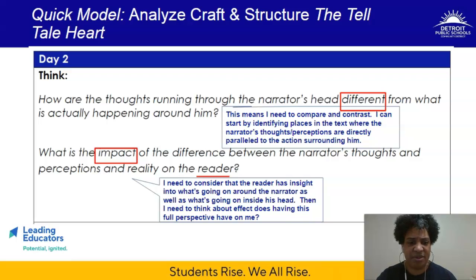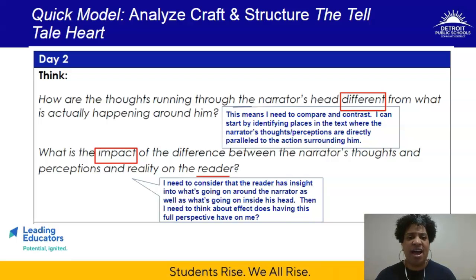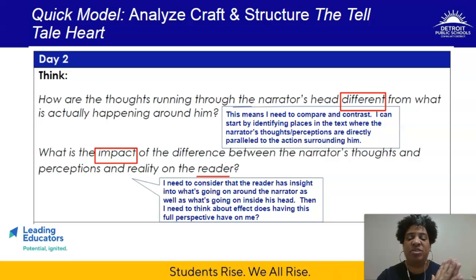I need to consider that as a reader I have insight into what's going on around the narrator as well as what's going on in his head because he's telling me. I need to think about what effect having this full perspective has on me as a reader. I know what he's telling me, and I'm perceiving what's happening from a very different vantage point than he is. So when I take my perspective on the text alongside what the narrator is telling me, what is the impact of the disconnect between perception and reality — and what we know to be true? That is how you approach the think section.